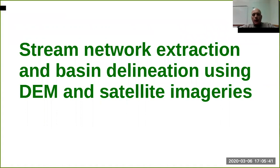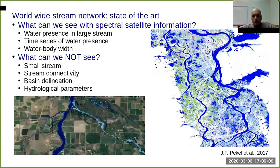Now let's move from geomorphometry analysis to stream network extraction and basin delineation. The digital elevation model is extremely useful to derive elements of hydrography. As I mentioned before, the DEM is useful, but there is also other information that can tell us things — like satellite images that can tell us where there is water presence.